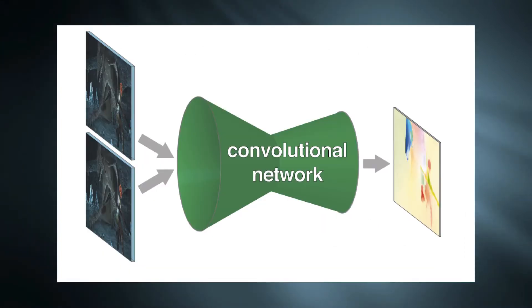So the basic idea of this work is given two consecutive images, optical flow is estimated by a neural network.